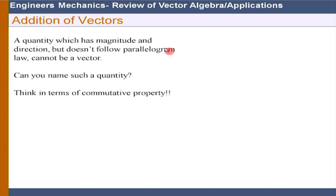Here is a question: a quantity which has magnitude and direction and follows the parallelogram law should be a vector. But can we define a quantity which has magnitude and direction but does not follow the parallelogram law? Therefore it cannot be a vector. I am looking for an answer from at least one of the remote centers.